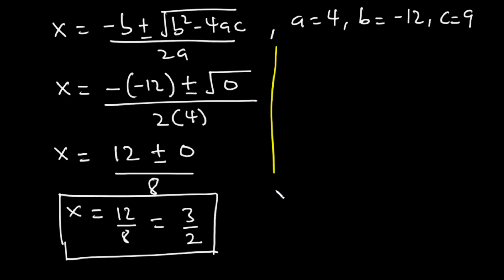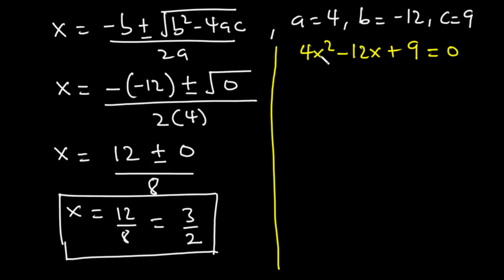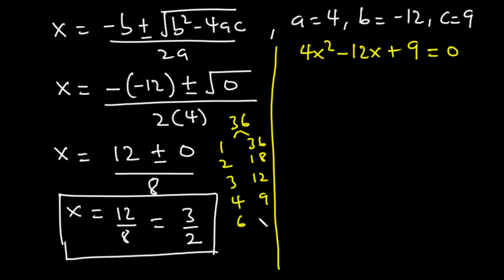Let's use factorization to confirm. The equation is 4x squared minus 12x plus 9 equals 0. The coefficient of x squared is 4 and the constant is 9, so we multiply 4 times 9 to get 36. Factors of 36 are: 1 and 36, 2 and 18, 3 and 12, 4 and 9, and 6 and 6. We need factors that multiply to 36 and add up to negative 12. Negative 6 minus 6 equals negative 12, so we select 6 and 6.